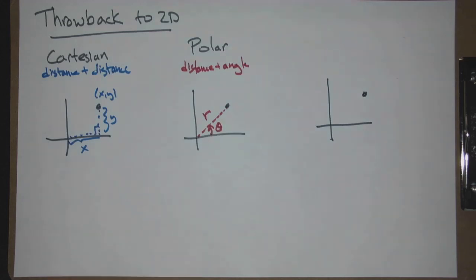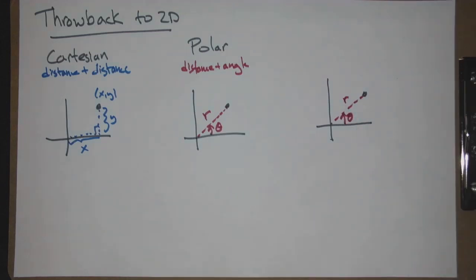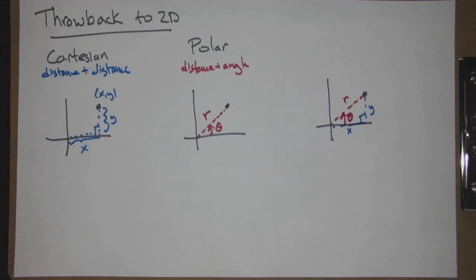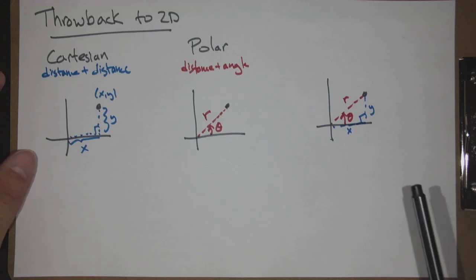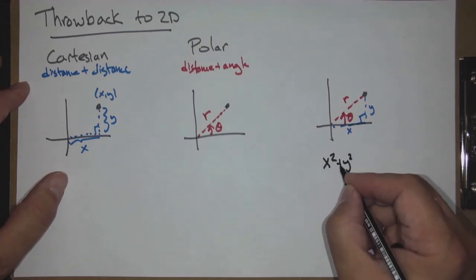To convert, we overlap everything: theta, R, X, and Y. We look at the picture and note we have a right triangle. We can use trig, and even simpler — the Pythagorean theorem. So X squared plus Y squared equals R squared. That one will make a comeback in our lecture.